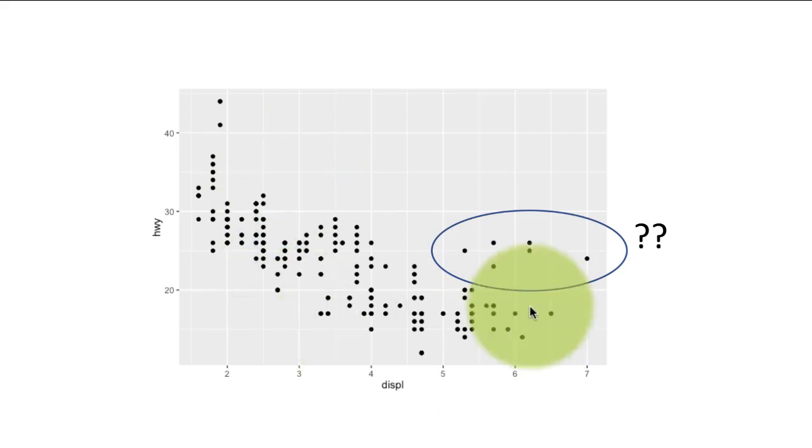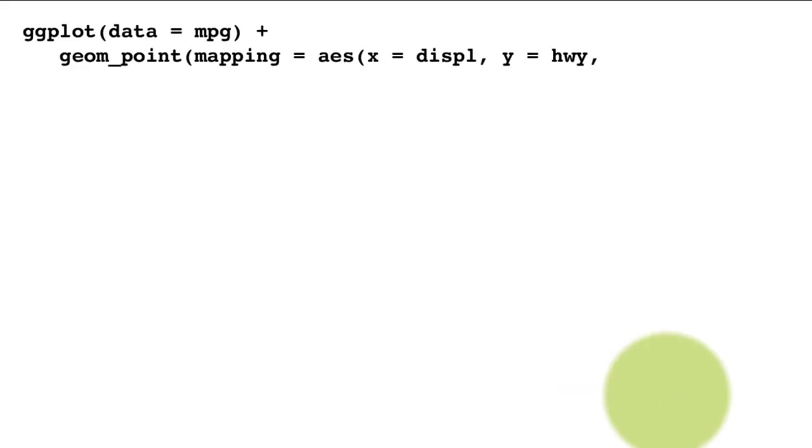Right now this is a two dimensional surface. We are able to plot displacement versus highway mileage. We are able to plot two dimensions. What we are now talking about is can we add one more dimension to the plot? And up to this point is still the old plot. ggplot data equals mpg geom_point mapping equals x is displacement y is highway. But now we add one more aspect to the aesthetic. We are saying color equals class.